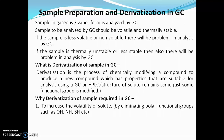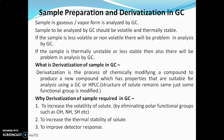Volatility of the solute is increased by eliminating polar functional groups such as hydroxyl group, amine group, sulfahydryl group, or carboxylic acid group. If such groups are eliminated, volatility of the solute will increase. The second reason is to increase thermal stability of the solute. Next, to improve detector response — introduction of some halogenated acyl group in the sample will improve its detection by electron capture detector. And lastly, to improve separation of solutes by chromatography.